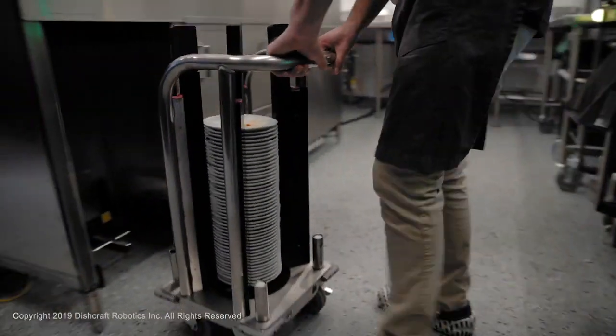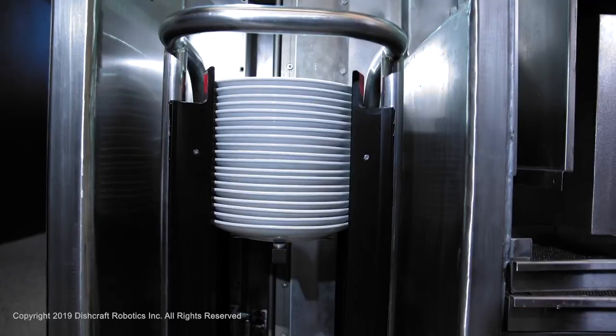And the robot takes over from there. It will pick off, scrub, and check every dish for remaining food debris.